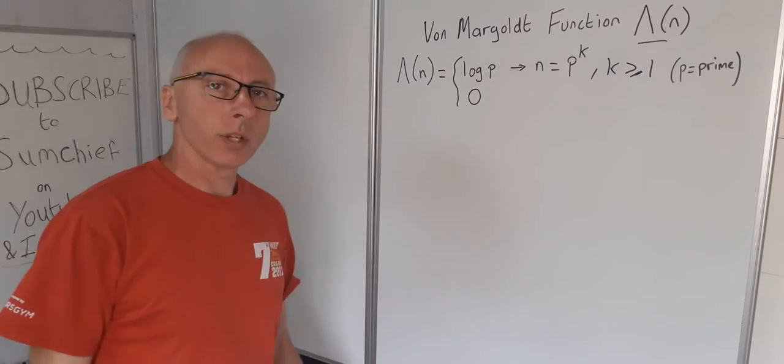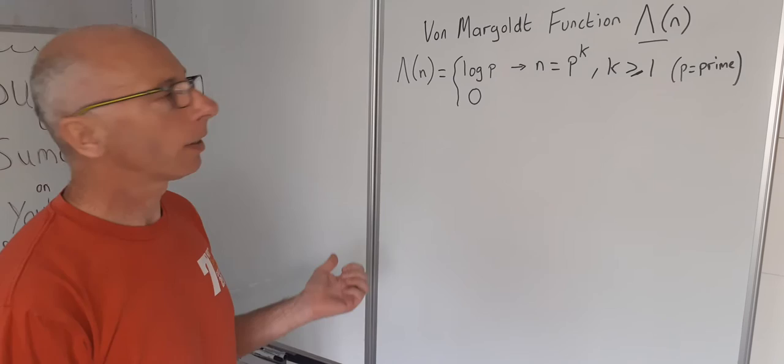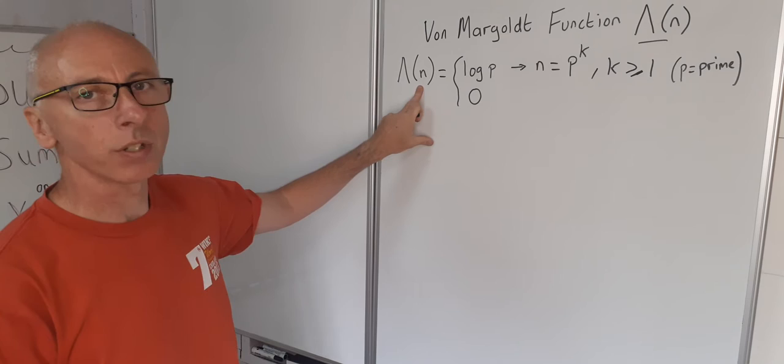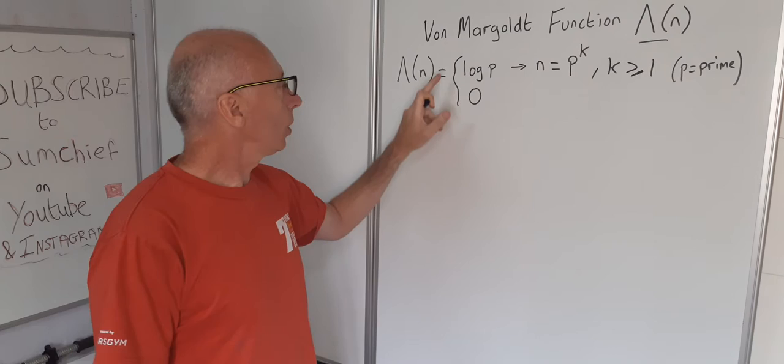So in this video we're going to look at an interesting property of the von Mangoldt function. Now the von Mangoldt function is denoted by capital lambda of n. Now n is an integer so it's a piecewise function that takes the value of either log of p or zero.